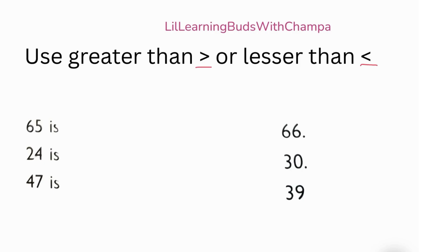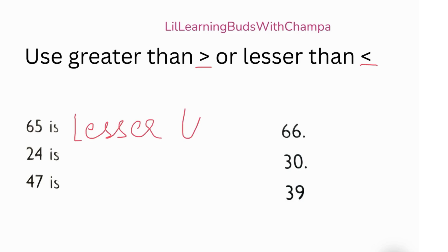This is the symbol for greater than, and this is the symbol for lesser than. So 65 is blank 66 — is 65 greater than 66, or is 65 lesser than 66? Yeah, lesser than! So 65 is lesser than 66.